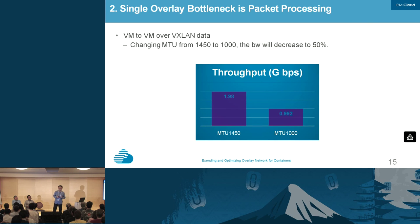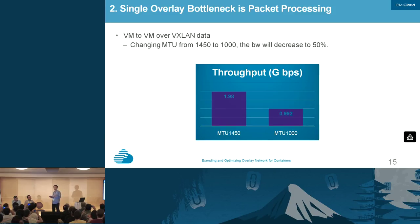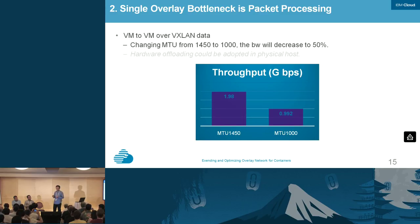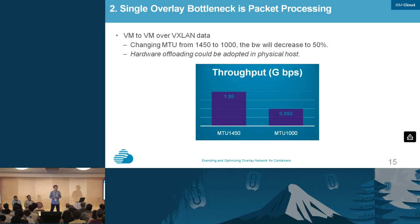What is the performance bottleneck for single overlay cases? It is packet processing capacity. Using VM-to-VM VXLAN data, when we reduce the MTU — the maximum transfer unit size — from 1450 to 1000, we generate more packets, which occupies CPU processing capacity, and bandwidth decreases sharply to half. That's why hardware offloading is widely adopted in physical hosts. To optimize this there are also other techniques, for example jumbo frames, but you should take care using them — for example, you need to consider the fragmentation problem.